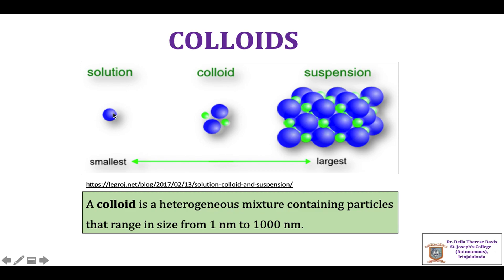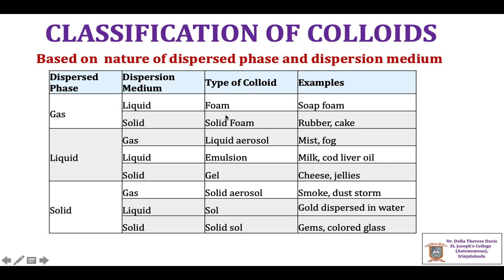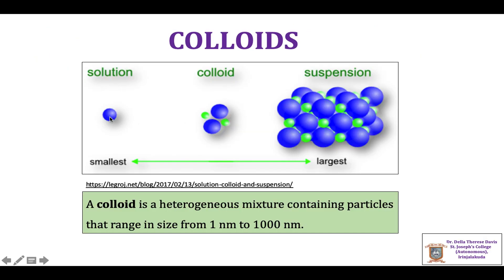In a solution, the particle size is less than 1 nanometer, usually lying in the range of 0.1 to 1 nanometer. In the case of a suspension, the particle size is always greater than 1000 nanometers. A colloidal system is a heterogeneous system in which the particle size lies between 1 to 1000 nanometers.